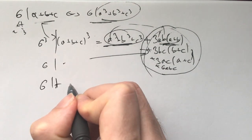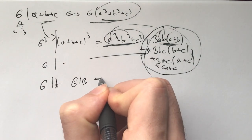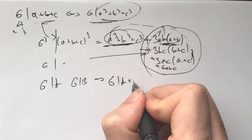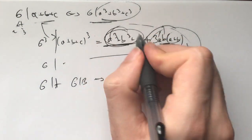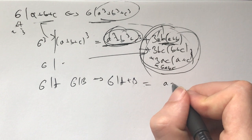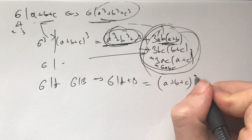And then from 6 divides a, 6 divides b, we have 6 divides a plus b, which in this case, if this is a, this is b, then this is going to be equal to a plus b plus c cubed.